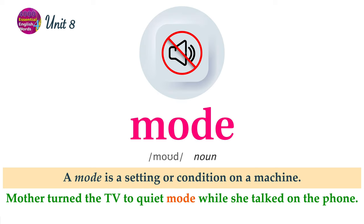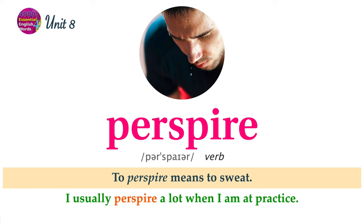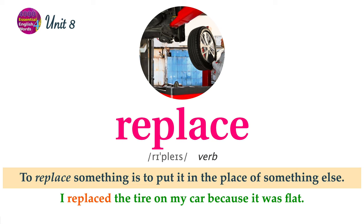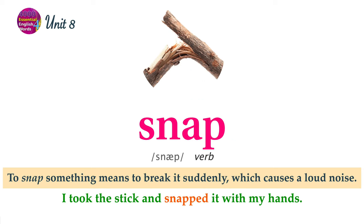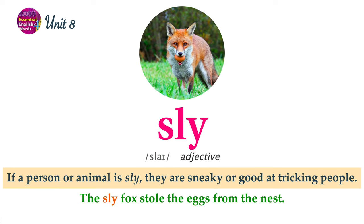A mode is a setting or condition on a machine. Mother turned the TV to quiet mode while she talked on the phone. To perspire means to sweat. I usually perspire a lot when I am at practice. To replace something is to put it in the place of something else. I replaced the tire on my car because it was flat. To snap something means to break it suddenly, which causes a loud noise. I took the stick and snapped it with my hands. If a person or animal is sly, they are sneaky or good at tricking people. The sly fox stole the eggs from the nest.